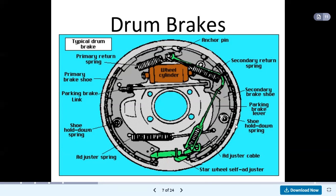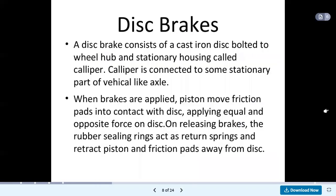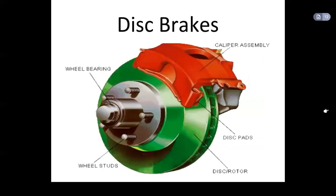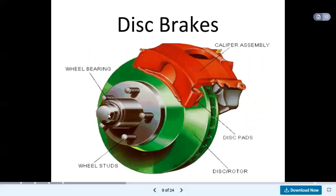The second type by construction is the disc brake. It consists of a cast iron disc bolted to the wheel hub and a stationary housing called a caliper, which is connected to a stationary part of the vehicle like the axle. When brakes are applied, a piston moves friction pads into contact with the disc. On releasing, rubber sealing rings act as return springs, retracting the piston and friction pads. Key components include wheel bearing, wheel studs, disc or rotor, caliper assembly, and disc pads.